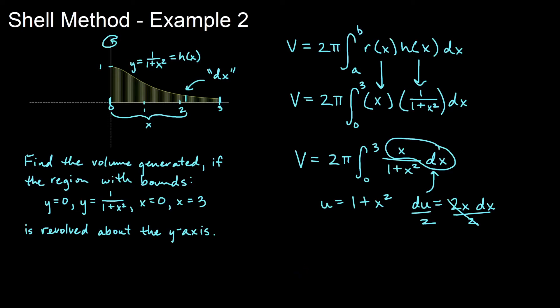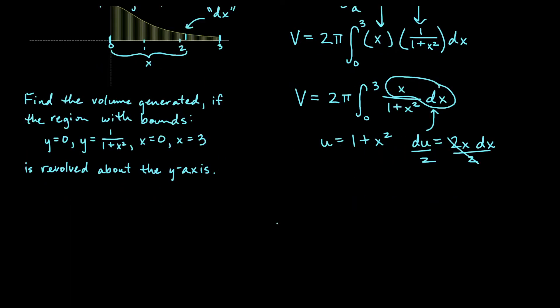I'm going to plug it directly in, and I know a lot of you see it's already going to reduce the 2 out there. So my volume, I will have 2π integral from x equals 0 to x equals 3. I'm writing x's there for a reason. I'll talk about that in just a second. So I have one-half du, and this is u on the bottom. So that would be du over u.